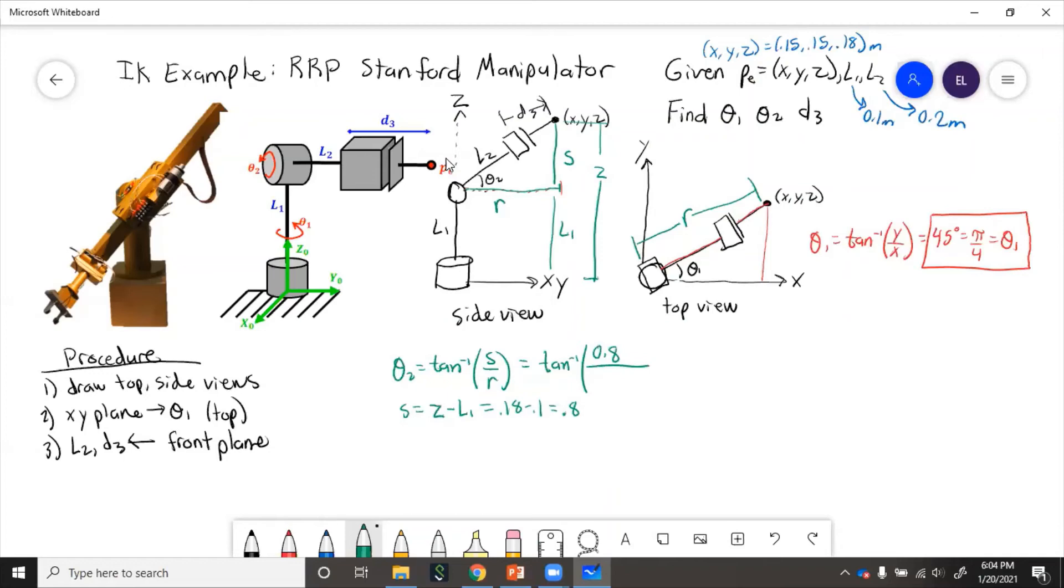And then r, we know that is going to be related to x and y. This distance is y, this distance is x. Then r squared equals x squared plus y squared, which gives us r equals 0.212. So then theta2 is 75 degrees.